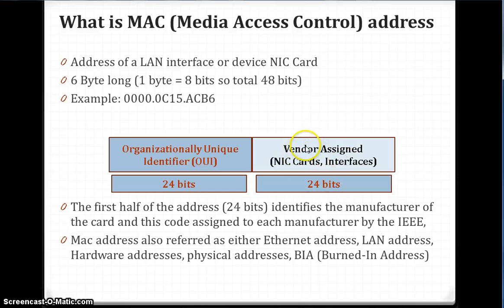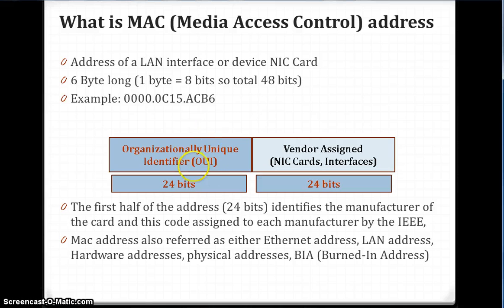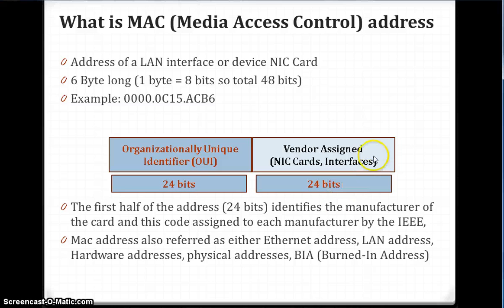The remaining 24 bits are unique for different devices. For example, if a PC company is making a lot of computers and installing NIC cards, the first 24 bits remain the same — for example IBM — and they assign different addresses in the remaining 24 bits for different PCs.